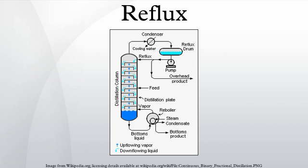The hottest tray is at the bottom of the column and the coolest tray is at the top. At steady state conditions, the vapor and liquid on each tray is at equilibrium. Only the most volatile of the vapors stays in gaseous form all the way to the top. The vapor at the top of the column then passes into the condenser, where it cools until it condenses into a liquid. The separation can be enhanced with the addition of more trays. The process continues until all the most volatile components in the liquid feed boil out of the mixture, which can be recognized by the rise in temperatures shown on the thermometer.